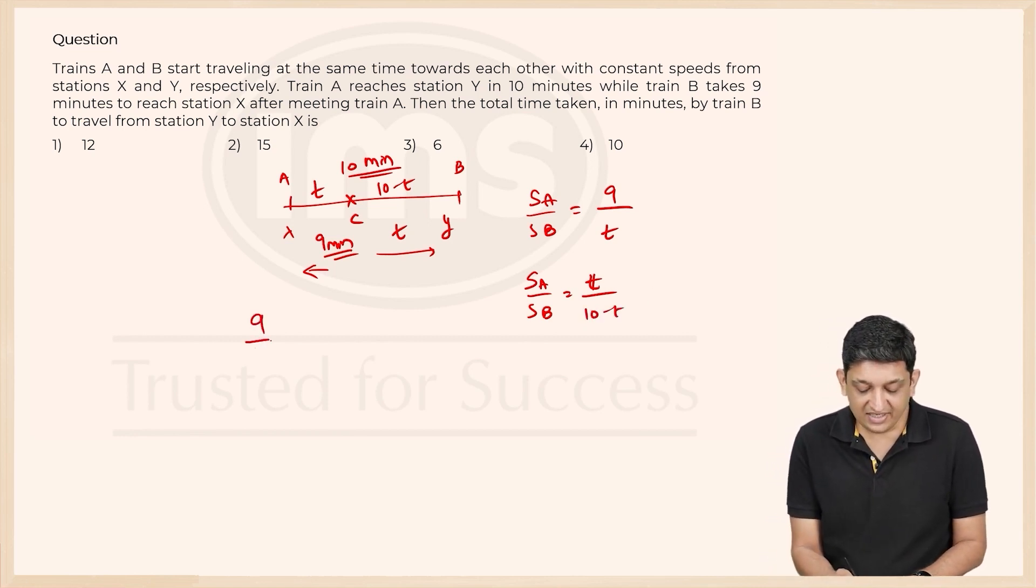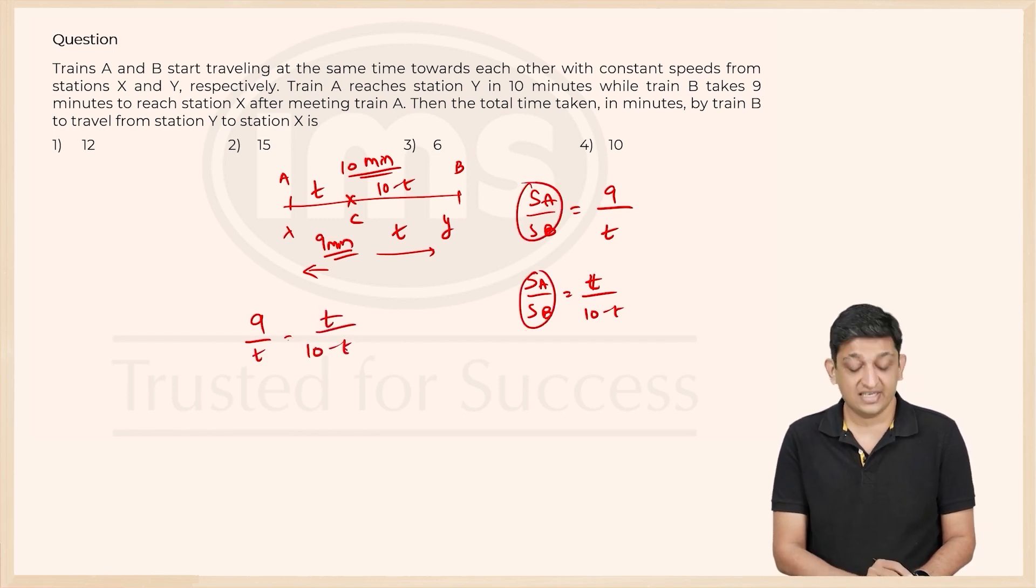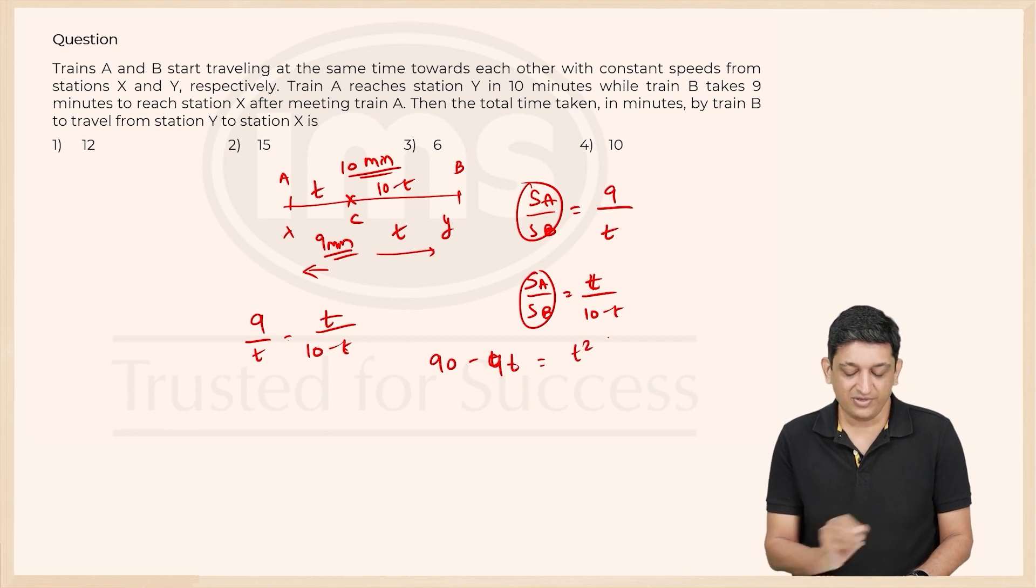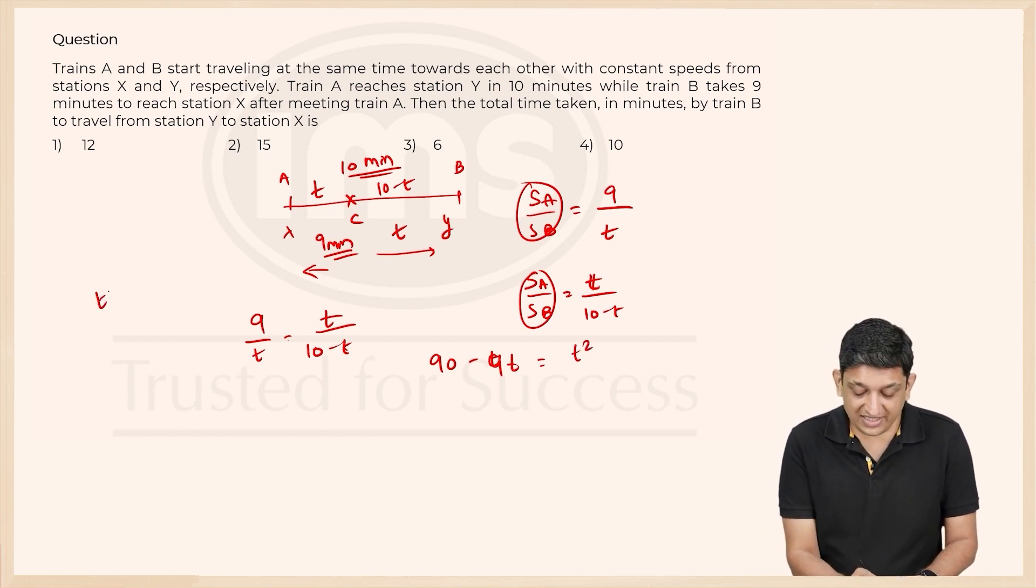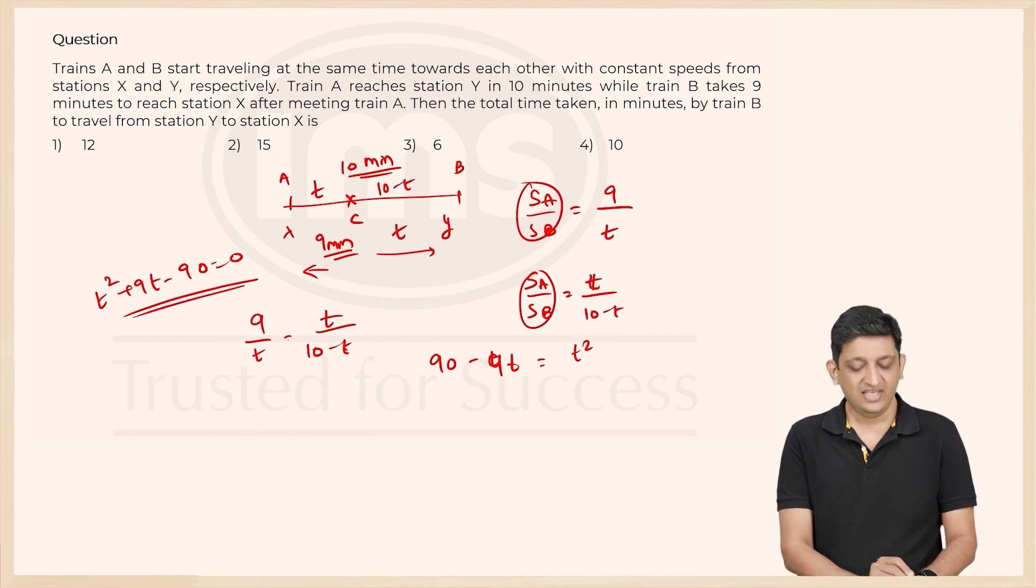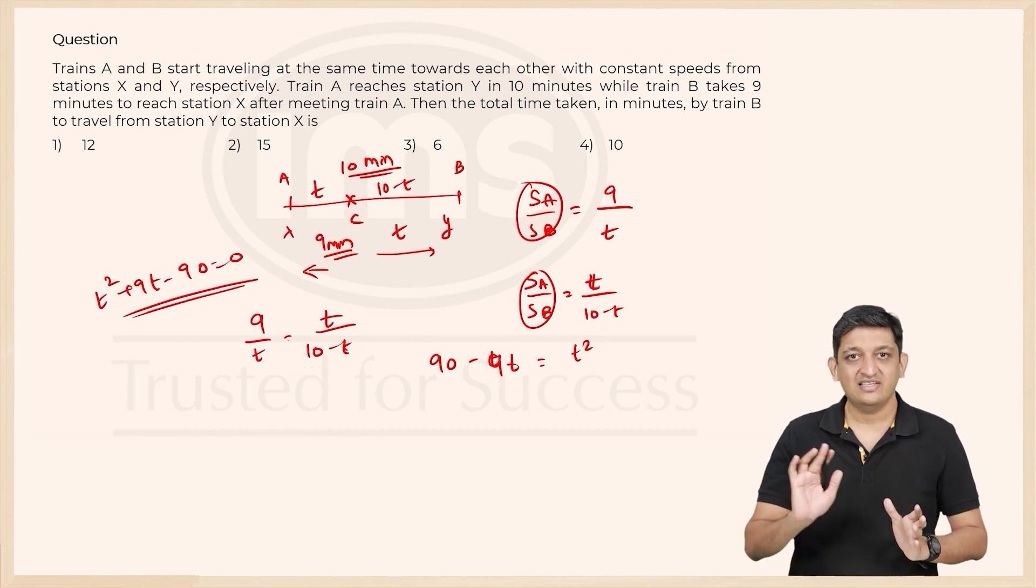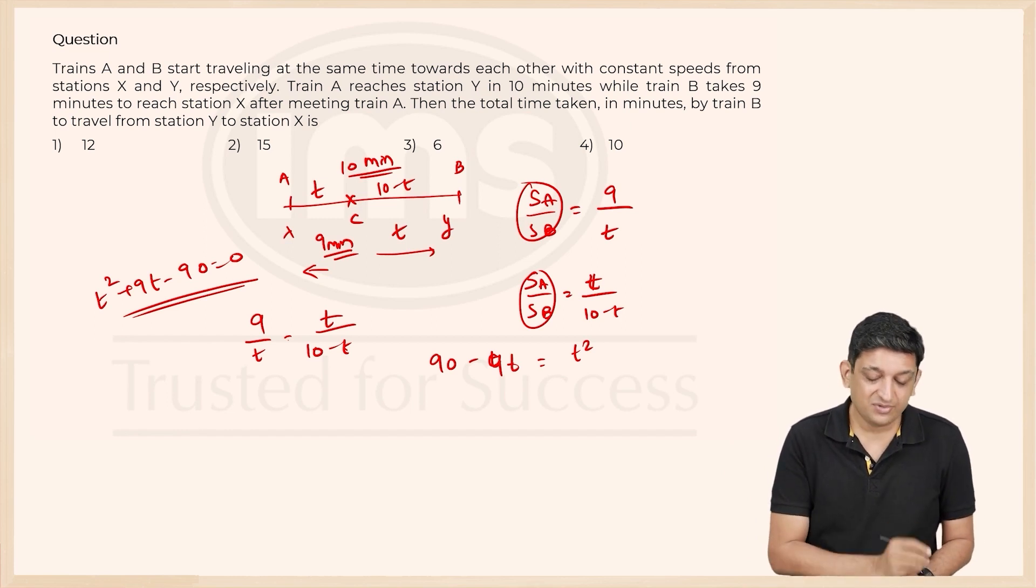So we can say that 9 by T is the same as T upon 10 minus T, because both of these are the same. We can easily figure out: 90 minus 9T is equal to T square. Or we can say T square plus 9T minus 90 equals 0. Do not get confused between 9T and 90.